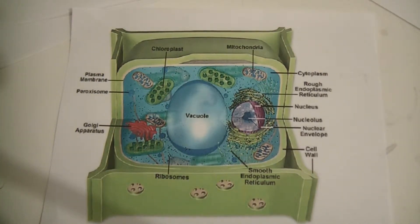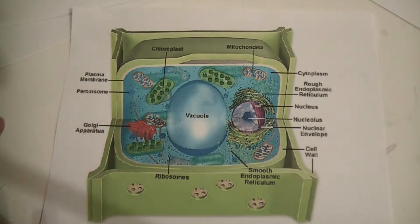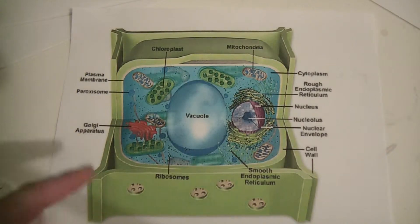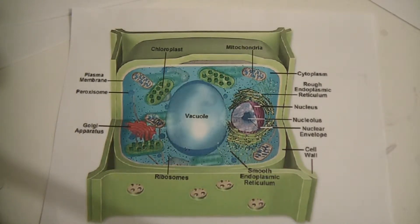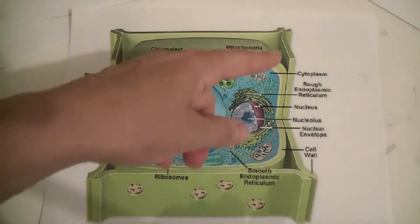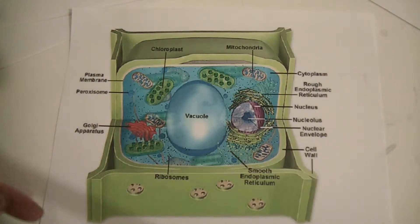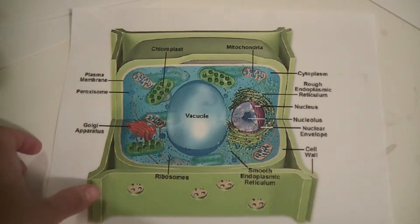Today we're going to talk about the plant cell and the structures inside called the organelles. Here we have an overview of the organelles and the entirety of the plant cell. Notice the overall general color is green due to the chloroplast, which we'll talk about in a minute. You also notice the rectangular or boxy shaped structure — that tells you it's a plant cell, as opposed to an animal cell which has a more rounded or ambiguous shape.